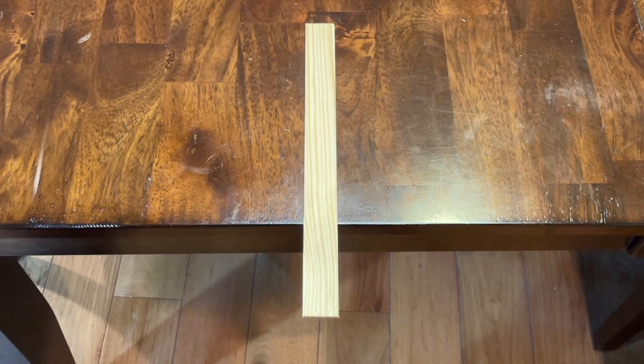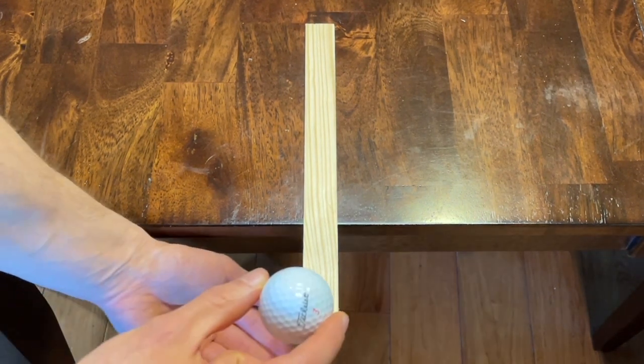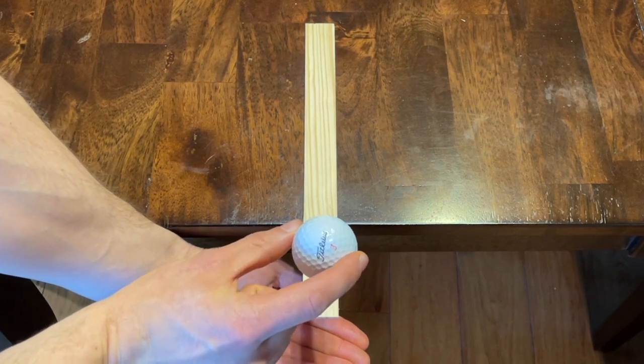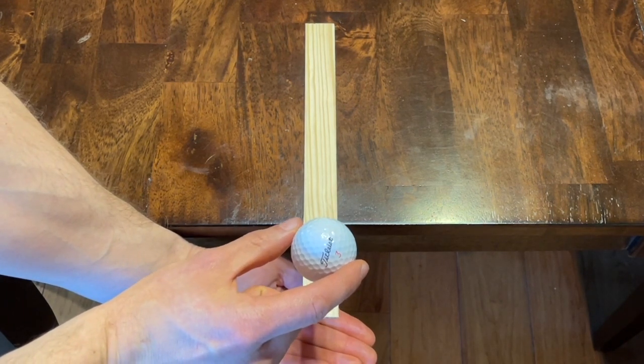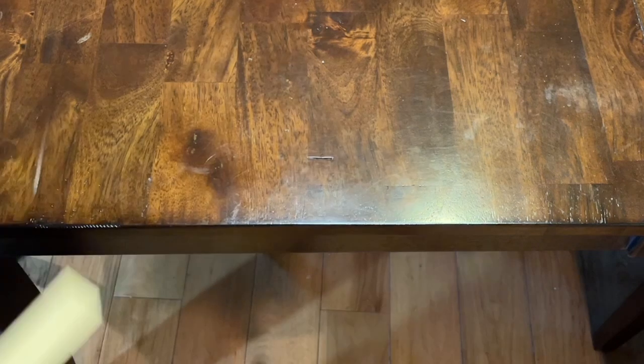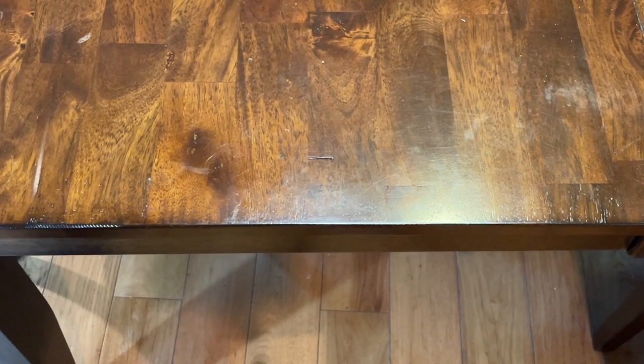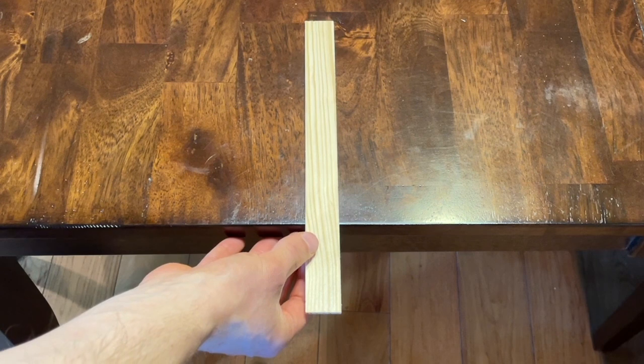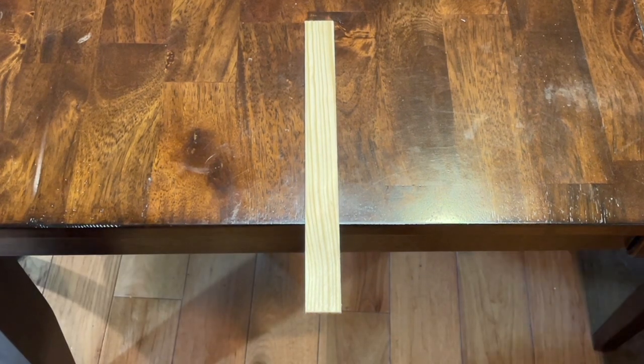So here we have just a paint stick hanging off the end of the table and what happens when I drop this golf ball from a few inches up on the end of it. The golf ball's weight is more than heavy enough to make it fly off the table.